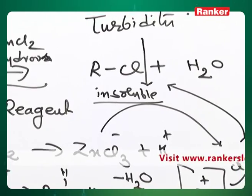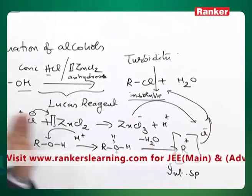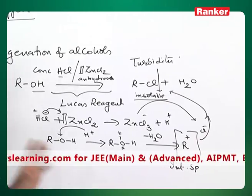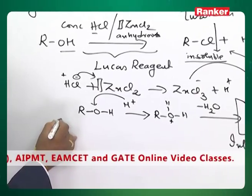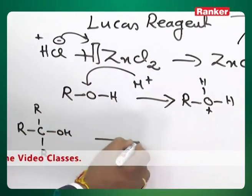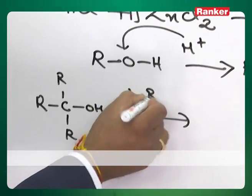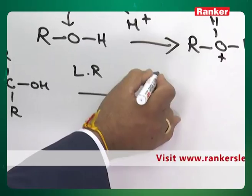Now the criteria is, I take three different types of alcohols, all will give turbidity because all are going to give alkyl halides. But if I take a tertiary alcohol and add this same Lucas reagent.